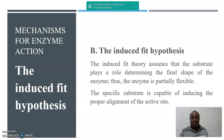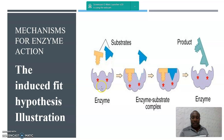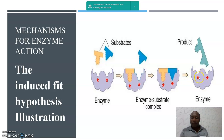The Induced Fit hypothesis assumes that the substrate plays a role in determining the final shape of the enzyme. Thus, the enzyme is partially flexible. The specific substrate is capable of inducing and changing the proper alignment of the active site for it to insert and the reaction to take place. We have two substrates and an enzyme here. You can see that the shape of the enzyme cannot accommodate those two substrates, so the enzyme tries to change its shape in order for the substrate to be inserted and the reaction to take place. This is an anabolic type of reaction in which the product is formed instead of being broken down.